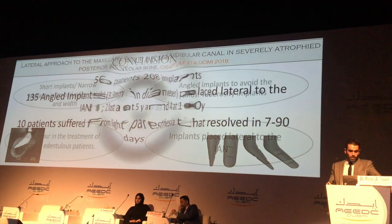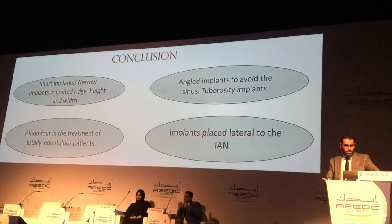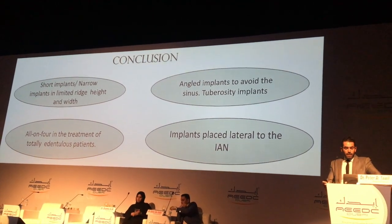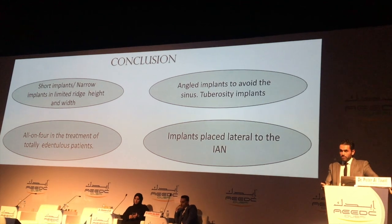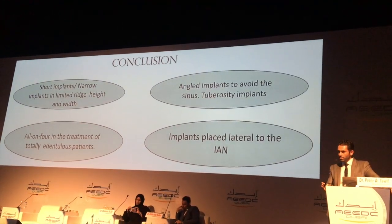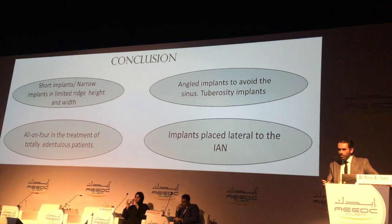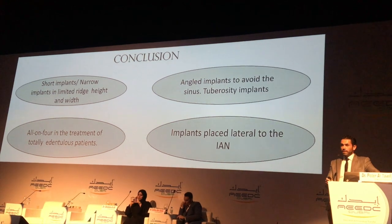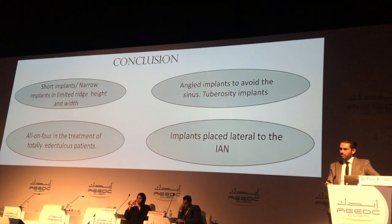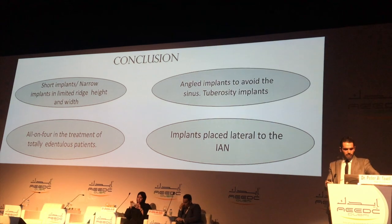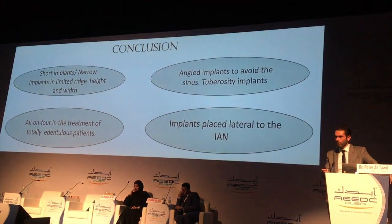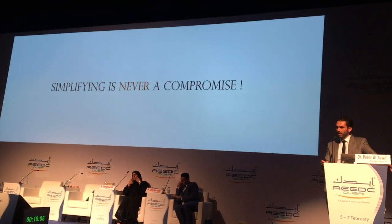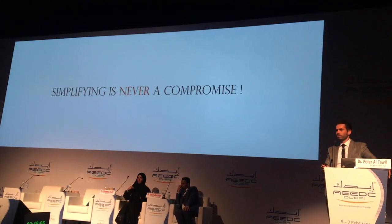In conclusion: short implants and narrow implants in the maxilla or mandible are viable options. Angled implants to avoid the sinus, using the septa, using the tuberosity — all viable options. The all-on-4 treatment is obviously a viable option. And in specific cases, with proper diagnosis and proper execution, implants placed lateral to the alveolar nerve are a viable option. It's very important to remember that simplifying is never compromising. Thank you all for your attention.